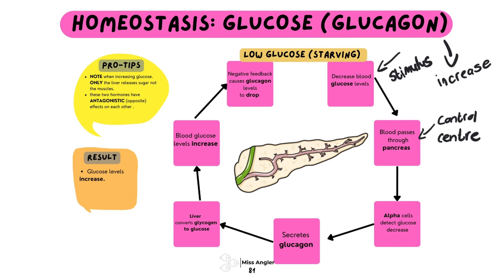Those cells are going to be alpha cells, and they are going to pick up that we don't have enough blood sugar and then send a signal to the liver so that we can get more sugar. It's really important that most students forget the names of these cells. Alpha cells create glucagon, and beta cells create insulin. Please know these receptor cells — they are also the cells that secrete the various hormones, so please know their names.